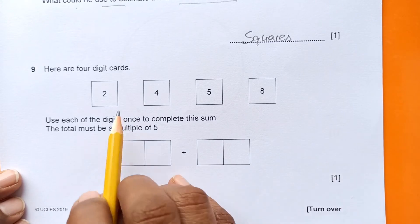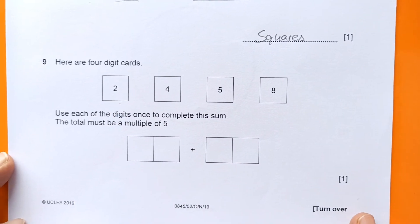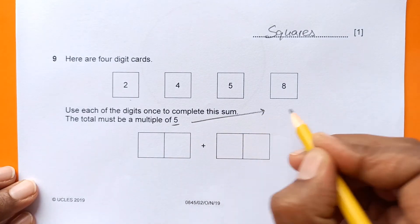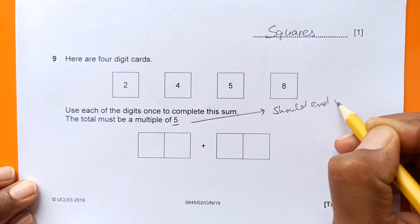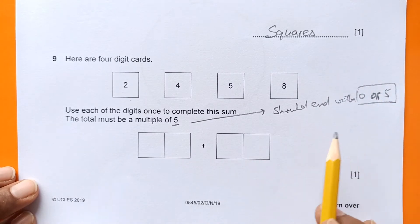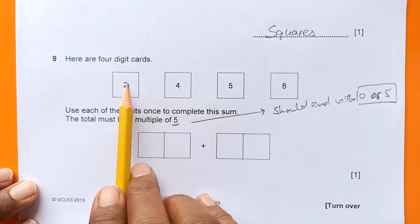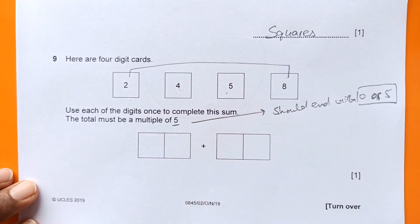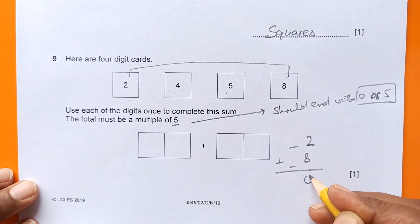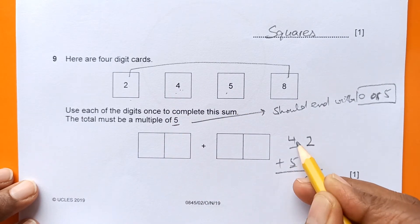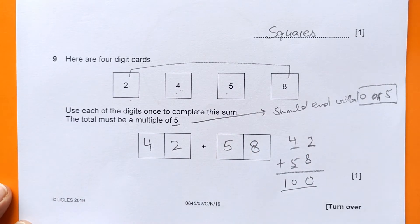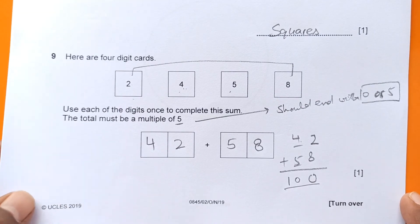Question 9: Use each of the four digit cards once to complete the sum so the total is a multiple of 5. Multiples of 5 end in 0 or 5. Taking digits 2 and 8 as one two-digit number and 4 and 5 as another: 8 plus 2 is 10, so 42 plus 58 equals 100, which is a multiple of 5. The answer is 42 plus 58.